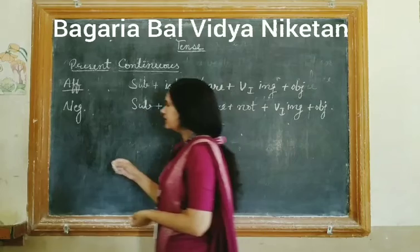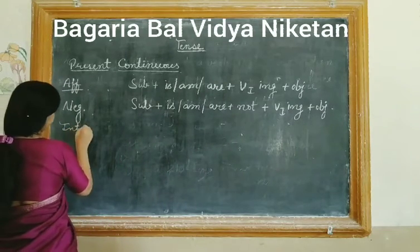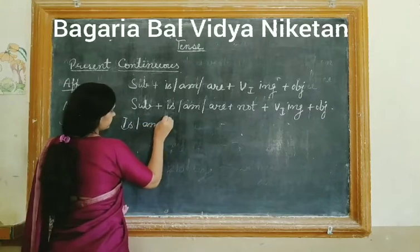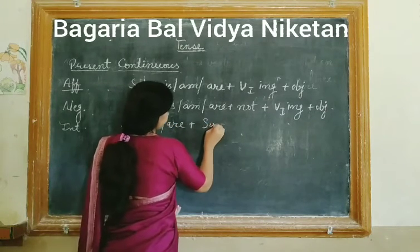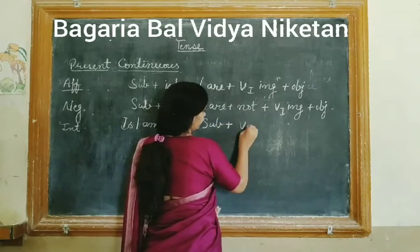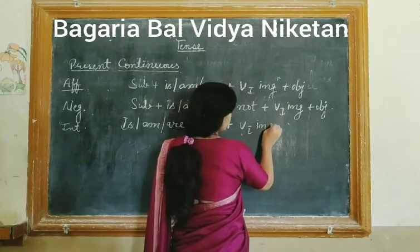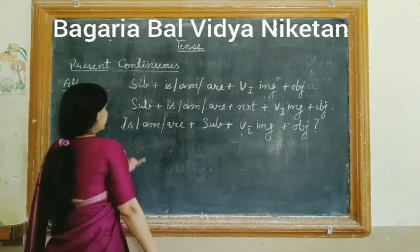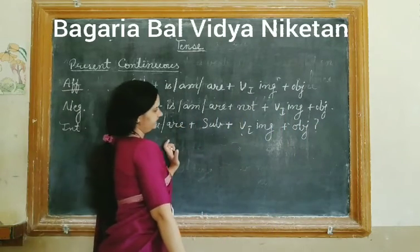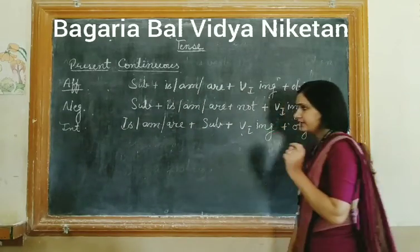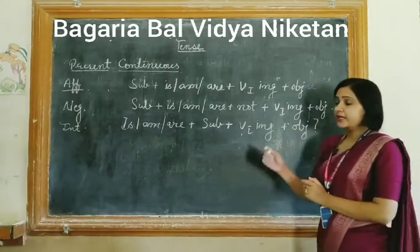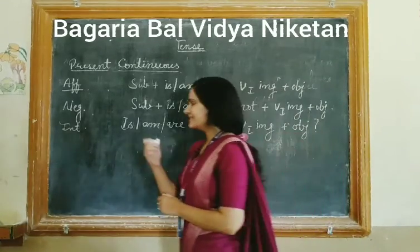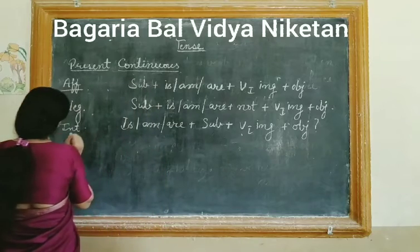Third one is interrogative. The formula is: Is/Am/Are + subject + verb's first form with -ing + object + question mark. For example: 'Are you writing a letter?' 'Are you going home?' 'Are you going to the market?' 'Are you taking care of my son?' Is tarike se ham interrogative sentence ki structure ke through sentences form kar sakte hain.